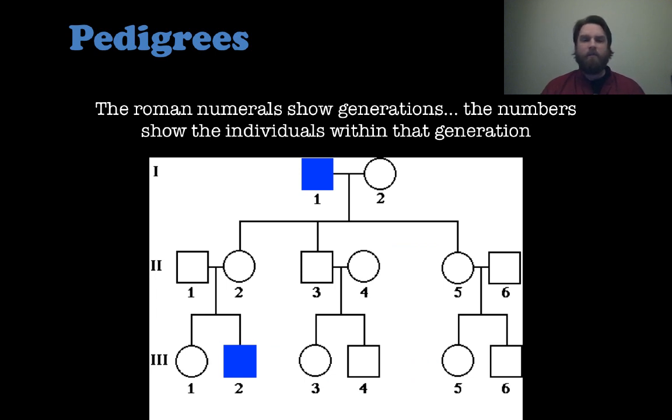The other things are the numbers. Roman numerals show generations, and the numbers show the individuals within that generation. So you can see at the very top, the Roman numeral one is the first generation that we are looking at. Now you see that you have individuals number one and number two within generation one. Then you move down to generation two. This would be the children or the offspring of generation one and their mates across the bottom there.